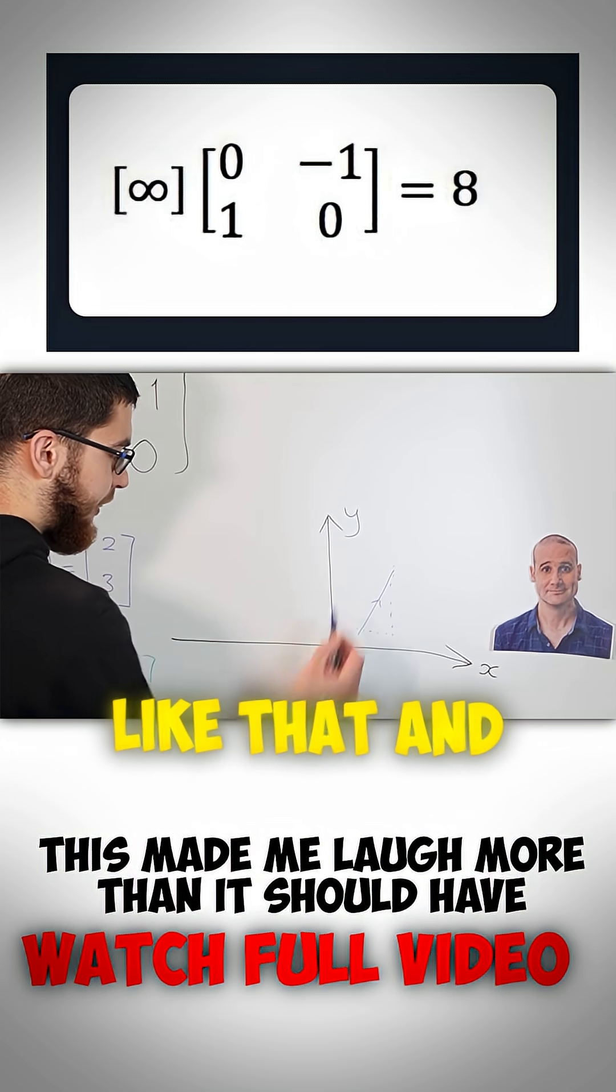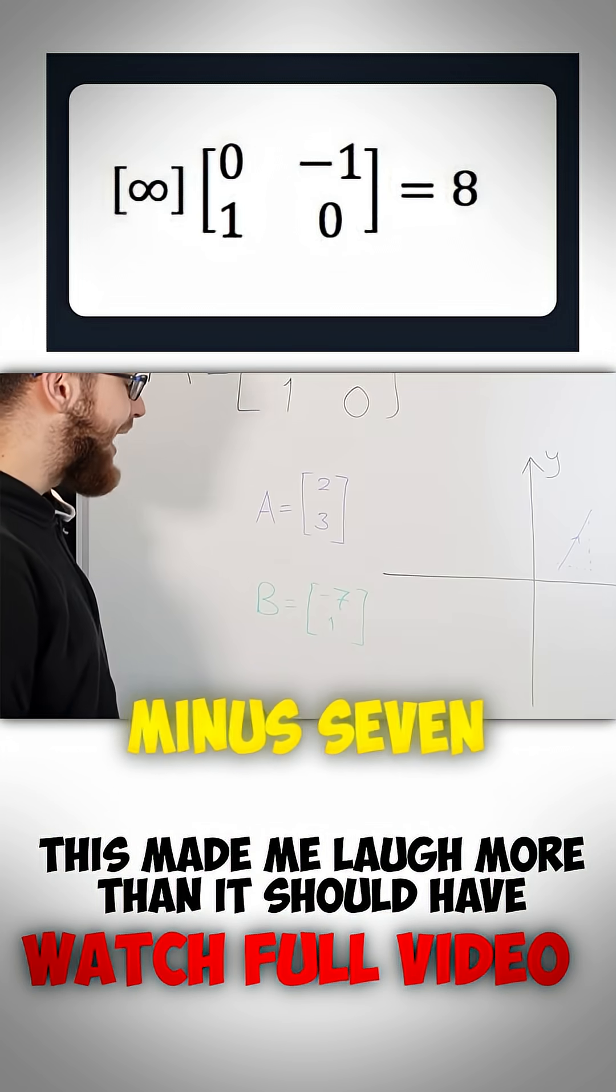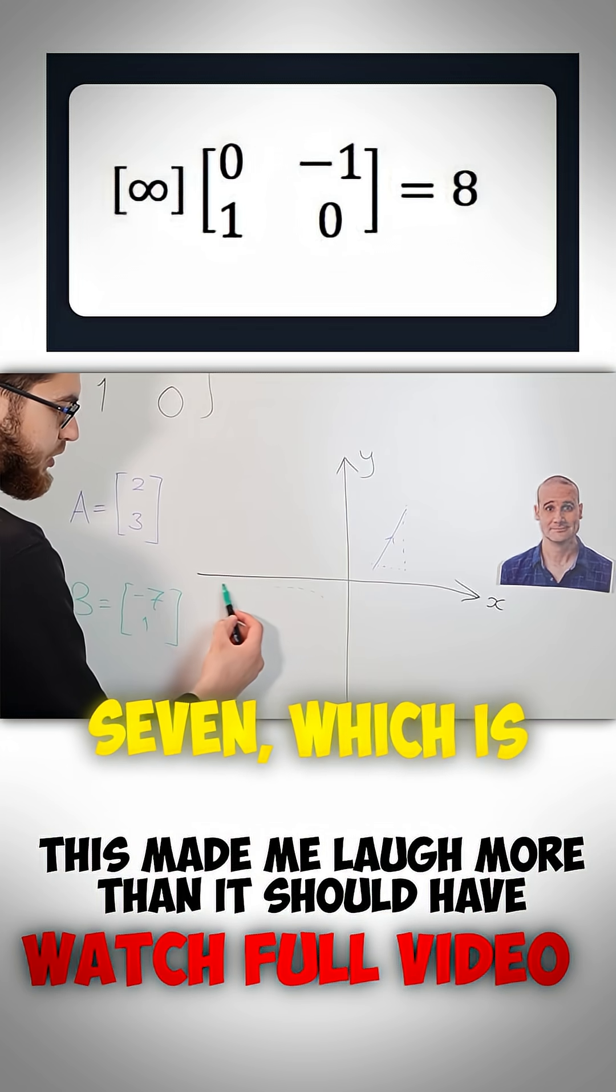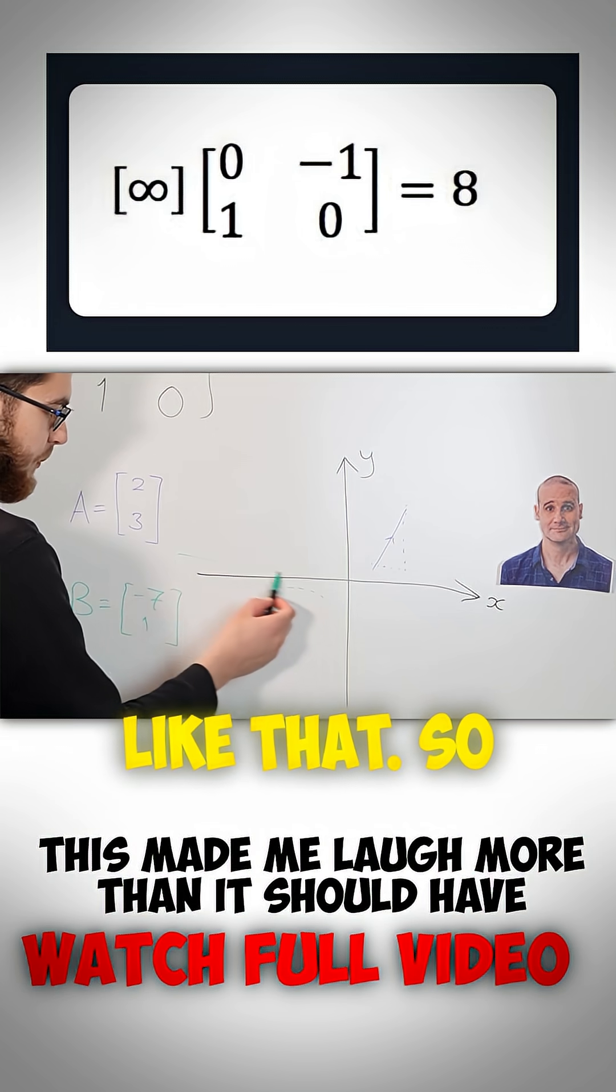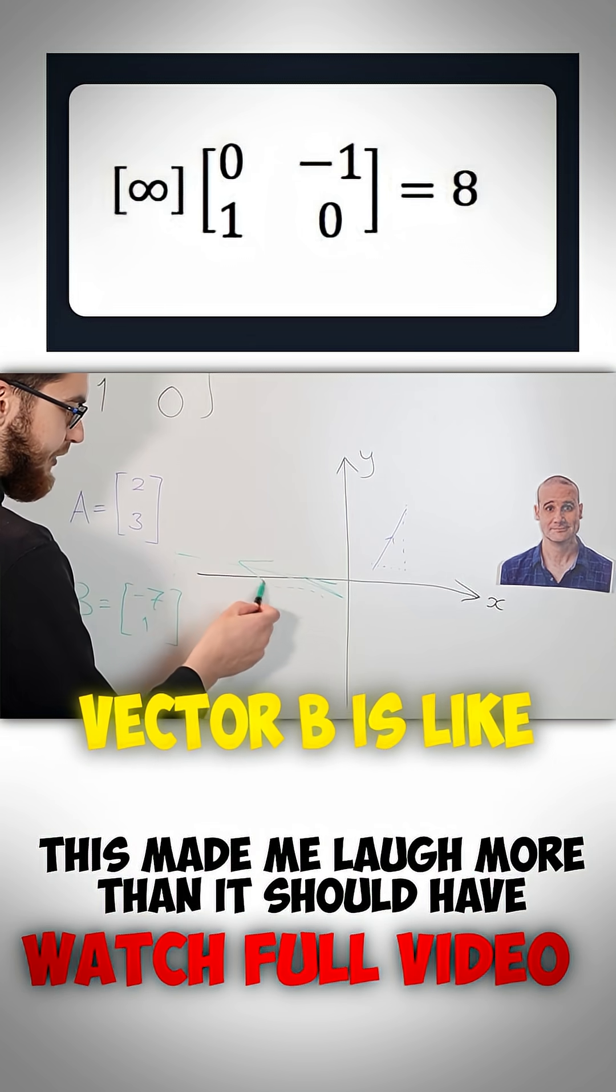So vector A looks like that, and if vector B is minus 7, 1, then you go minus 7, which is all the way that way, and then plus 1, which goes like that. So vector B is like this.